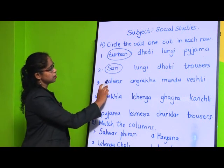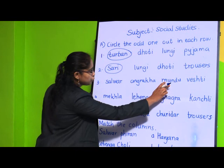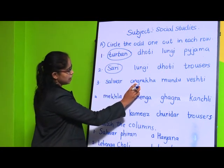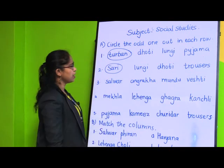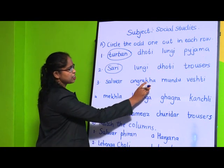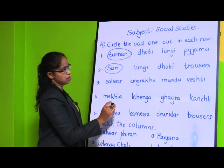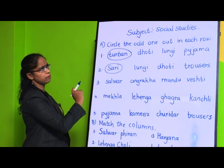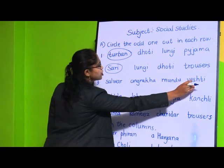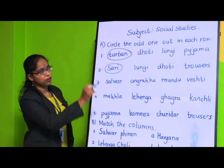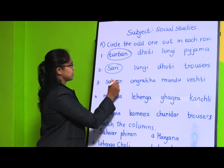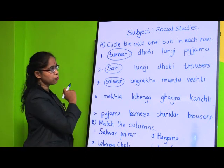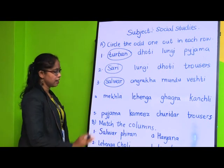Next, question number 3: Salwar, angarakha, mundu, and vishti. Angarakha is worn in Gujarat and Rajasthan, mundu in Kerala, vishti in Tamil Nadu, and salwar is worn by women. Angarakha, mundu, and vishti are worn by men. So salwar is the odd answer - you are going to circle salwar.